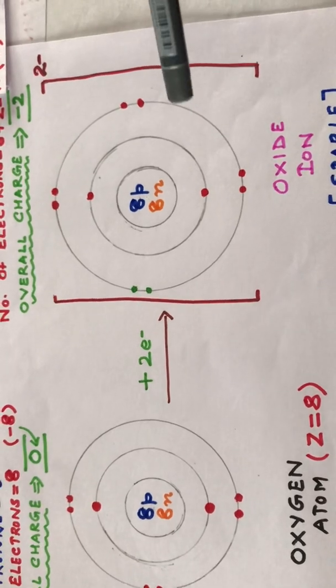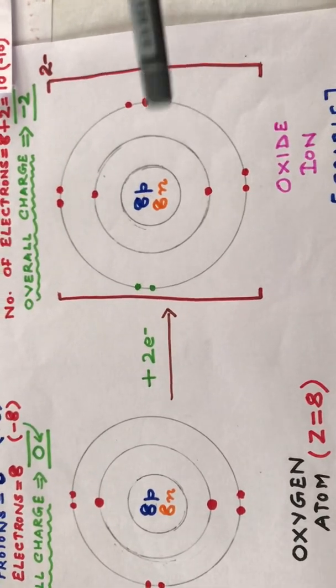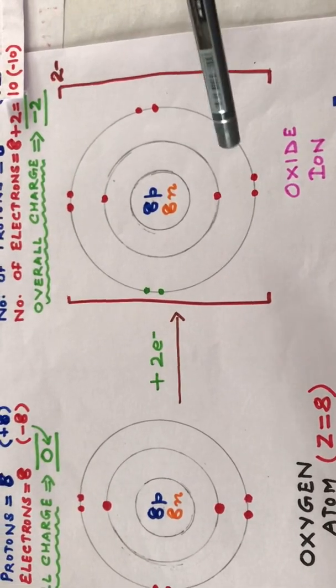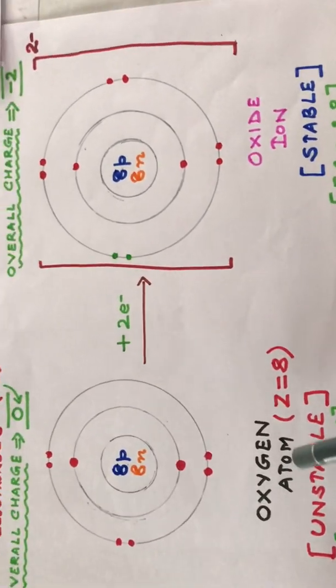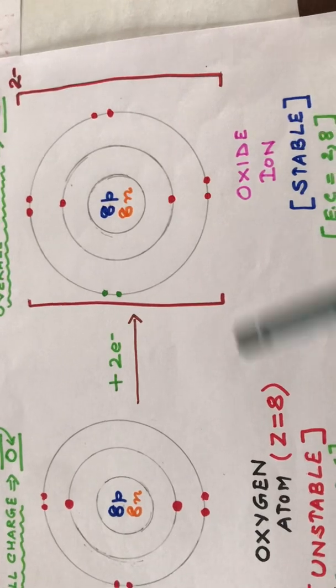When an atom has gained electrons, that particular atom is no more called an atom. It is now called an ion, and the name given to the ion formed from oxygen is known as oxide ion.